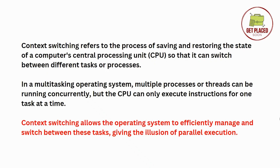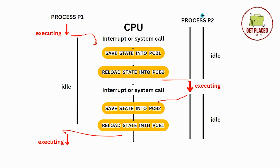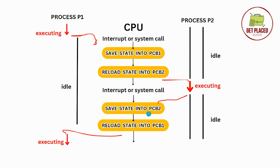Now let's look at a diagram. Process P1 and Process P2 are the two processes running concurrently on our CPU, and there is a CPU switch request. Right now Process P1 is executing and we have an interrupt or a system call — this event triggers a switch from Process P1 to Process P2. The first thing it does is save the state into PCB1 (Process Control Block 1) and reload the state from PCB2, then it goes to Process P2 and starts executing. Until another event occurs — another interrupt or system call — it switches back from Process P2 to Process P1, saves the state into PCB2, reloads from PCB1, and Process P1 continues executing. This is how context switching happens.